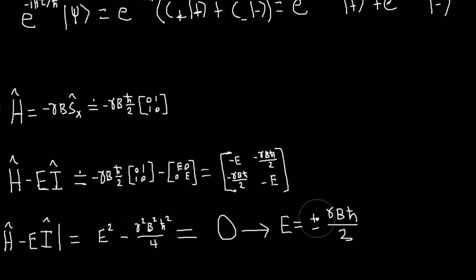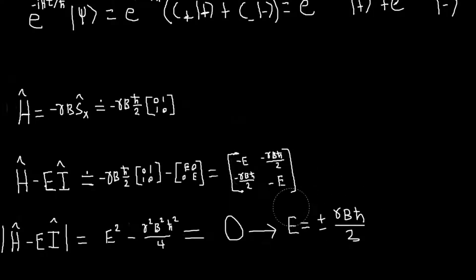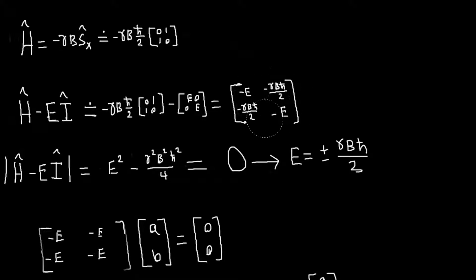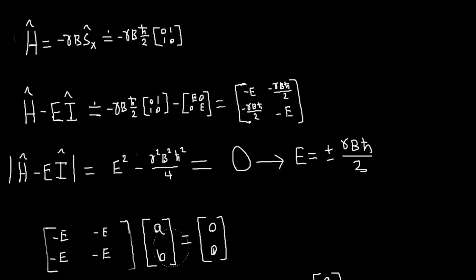And using these, we can find our eigenvectors. So the way we do that is we take this matrix and we apply it, we plug in each of these eigenvalues and apply it to this general eigenvector here, a and b. And if a and b is an eigenvector, then we should get zero, zero. So we can use that to solve for what our eigenvector is.